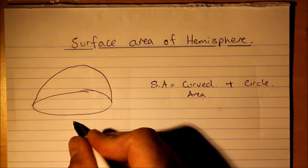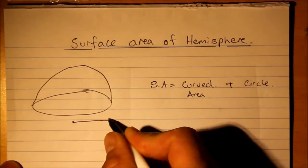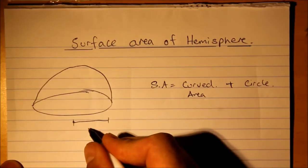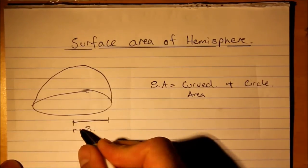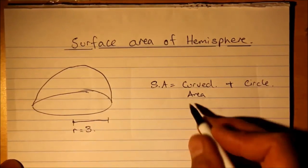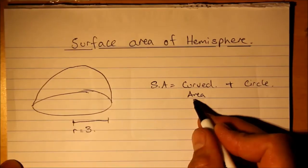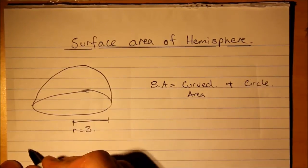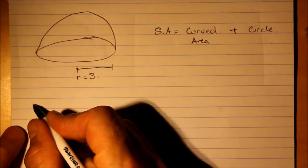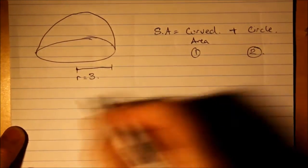So, let's go ahead and put some dimensions in. So let's say radius equals 3. Let's break it up and do the curve part first. We'll call that 1 and 2.